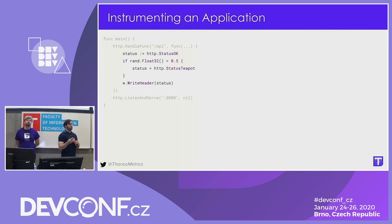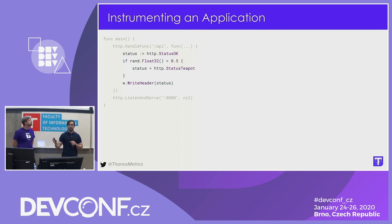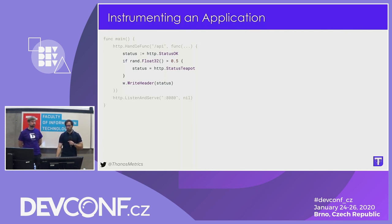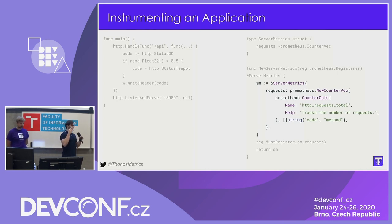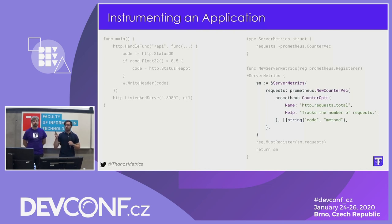Let's go through an example application. We define a Golang server that exposes one single API endpoint at slash API. It does minimal work: 50% of the time it returns status 200 OK, and the rest of the time status 418 teapot. We define a metric called HTTP requests total, tracking the total number of requests for any HTTP method and the response code. We should expect to see time series with labels code and method, with values like 200, 418, and methods GET, POST, etc.